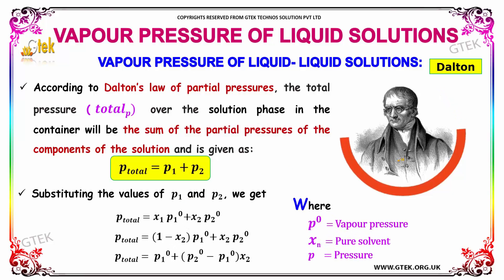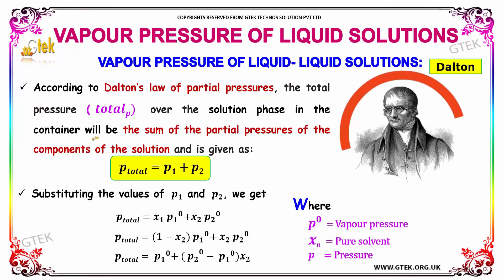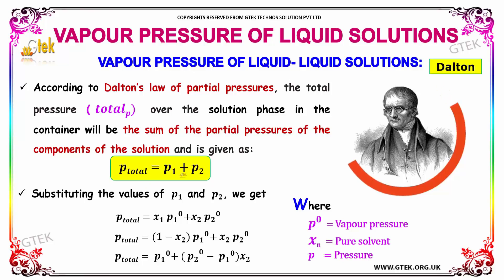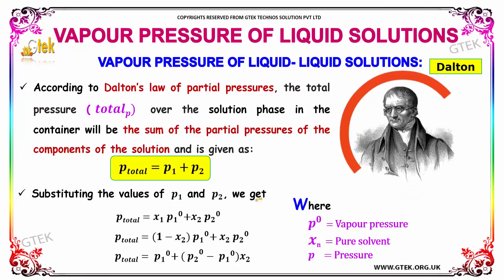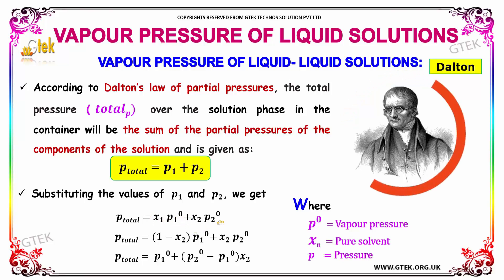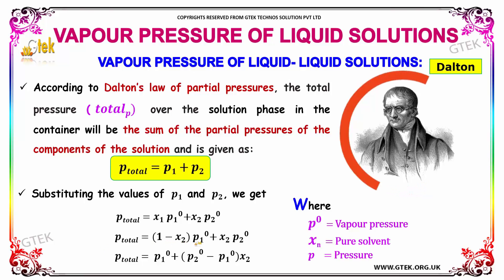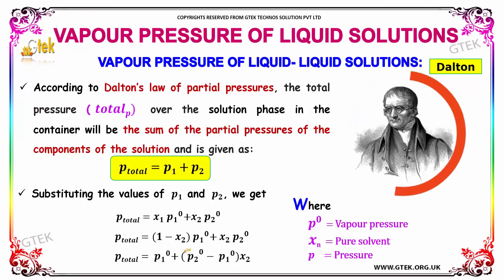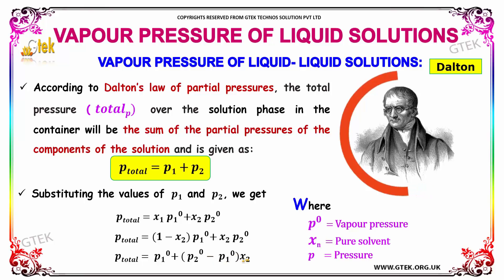According to Dalton's law of partial pressure, the total pressure over the solution phase in the container is the sum of the partial pressures of the components: P_total = P1 + P2. Substituting the values of P1 and P2, we get P_total = x1·P1° + x2·P2°. Since x1 = 1 − x2, this becomes P_total = P1° + (P2° − P1°)·x2.